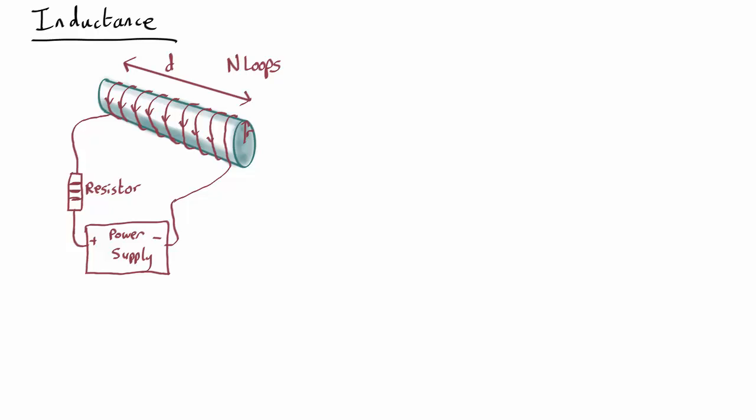We've seen that if we have a wire loop and we increase or decrease the current through it, it fights back. It generates an electromotive force or voltage opposing the change. If we're trying to increase the voltage, it tries to push back and decrease it. If we're trying to decrease it, it pushes forward and increases it. Let's try and do some math behind that. Let's work out how big this fighting voltage is.